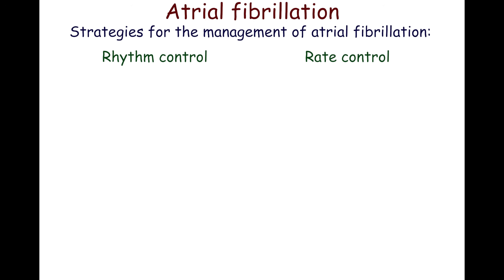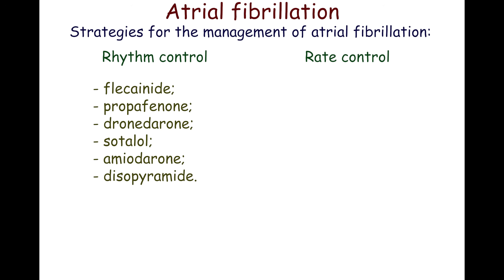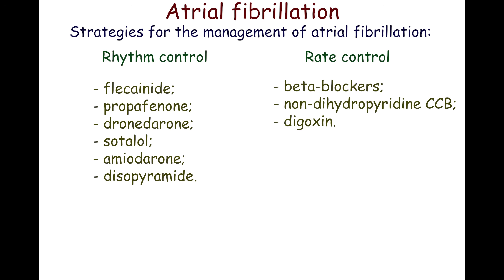In most patients, rhythm control is preferred over rate control. Flecainide, propafenone, dronedarone, sotalol, amiodarone, and disopyramide are used for long-term maintenance of sinus rhythm. Beta blockers, non-dihydropyridine calcium channel blockers, and digoxin are used for rate control.